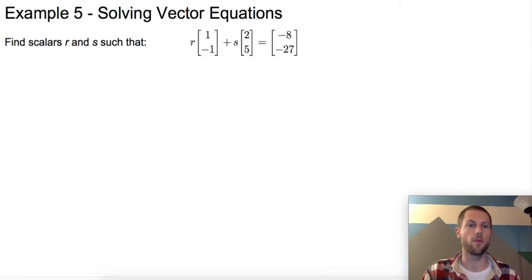In our final example, we are going to be solving vector equations. What I'd like to do is I'd like to find two scalar values, r and s, such that this equation is true. I want to add some number or some scalar multiple of this vector (1, -1). Let's just kind of visualize this for a second. What this means is that I've got some vector that is (1, -1). Let me try drawing that again. Over 1 and down 1.